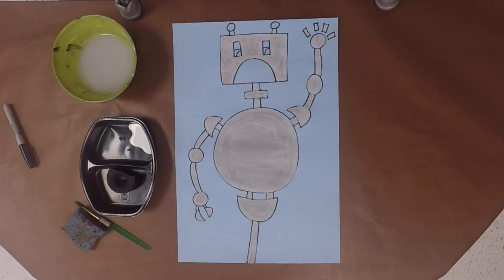Our next step is to add highlights and shadows to our robot. This is going to make our robot appear 3D and it's going to take our shapes and turn them into forms.